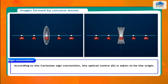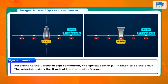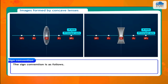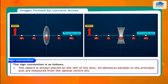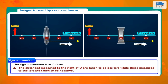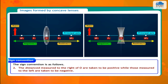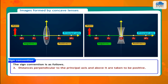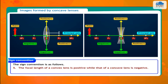According to the Cartesian Sign Convention, the optical center O is taken to be the origin and the principal axis is the X-axis. The sign convention is as follows: (1) The object is always placed on the left of the lens; all distances parallel to the principal axis are measured from the optical center O. (2) Distances measured to the right of O are positive; those to the left are negative. (3) Distances perpendicular to the principal axis and above it are positive. (4) Distances perpendicular to the principal axis and below it are negative. The focal length of a convex lens is positive, while that of a concave lens is negative.